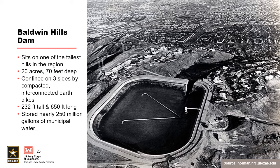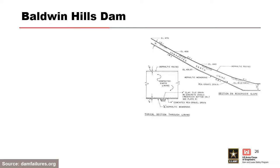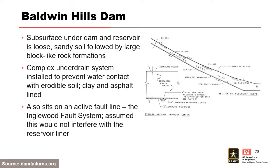Notice all the population downstream — it's a lot of people, very congested. The image shows the drainage system they built. They knew when constructing this that there were highly erodible soils underneath, and that it was on a fault line. Because of those factors, they needed a really good under-drainage system so that water didn't come in contact with those soils and create issues.